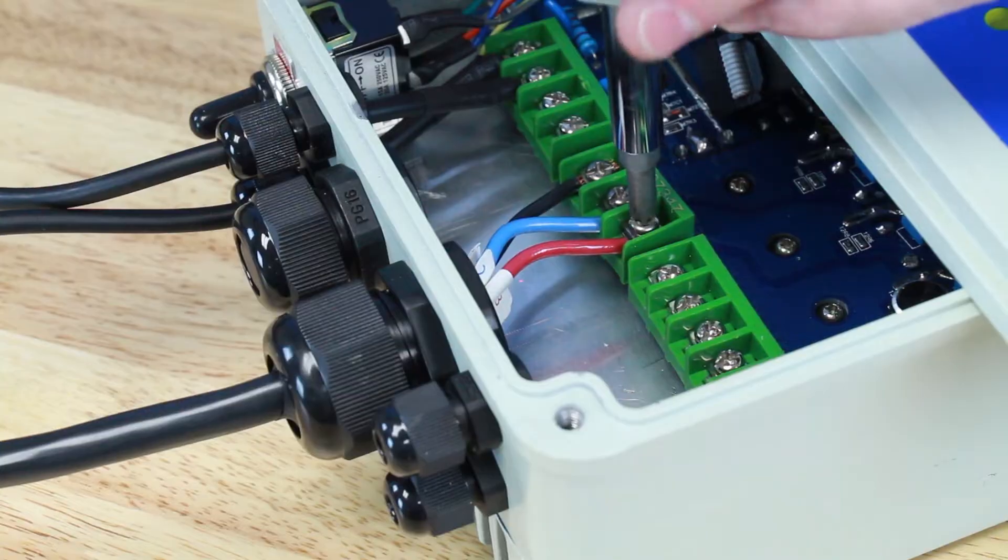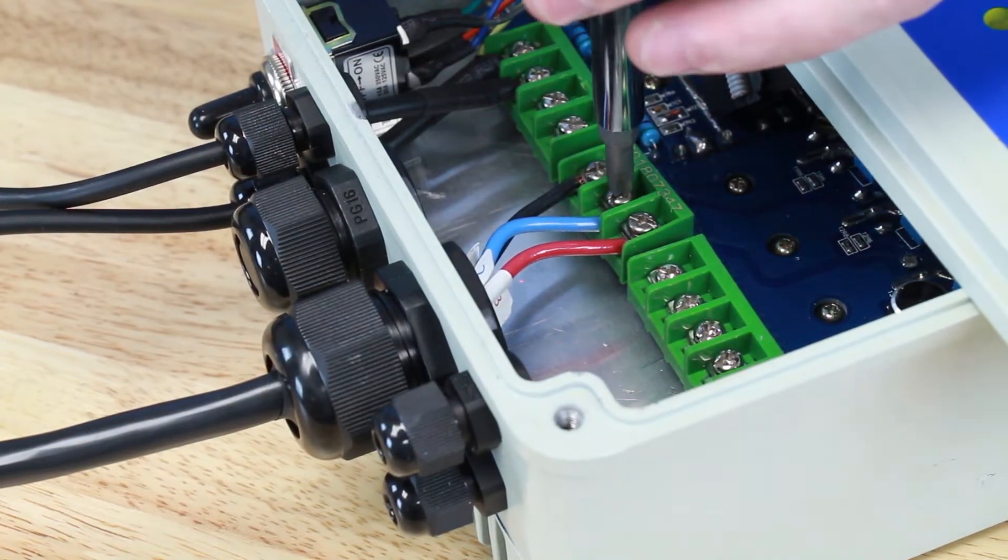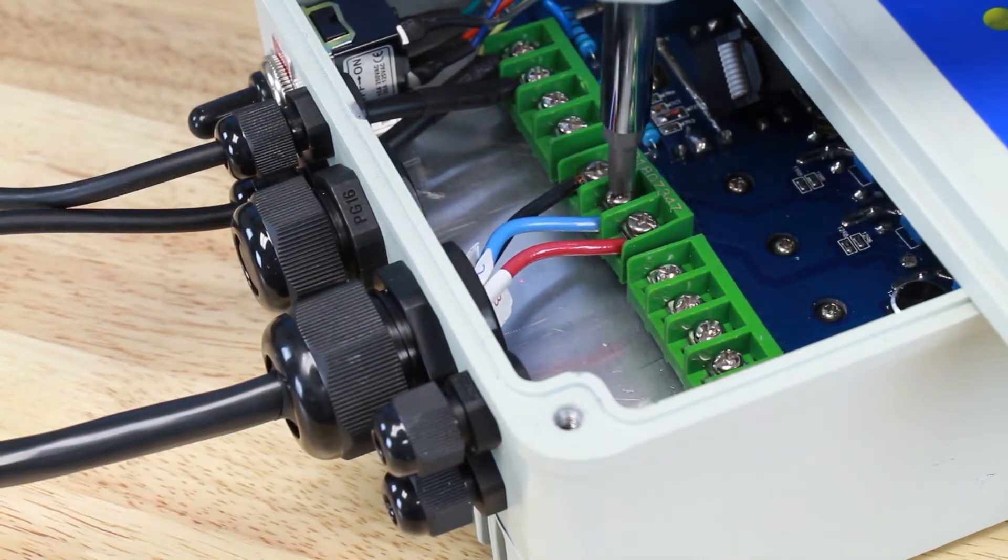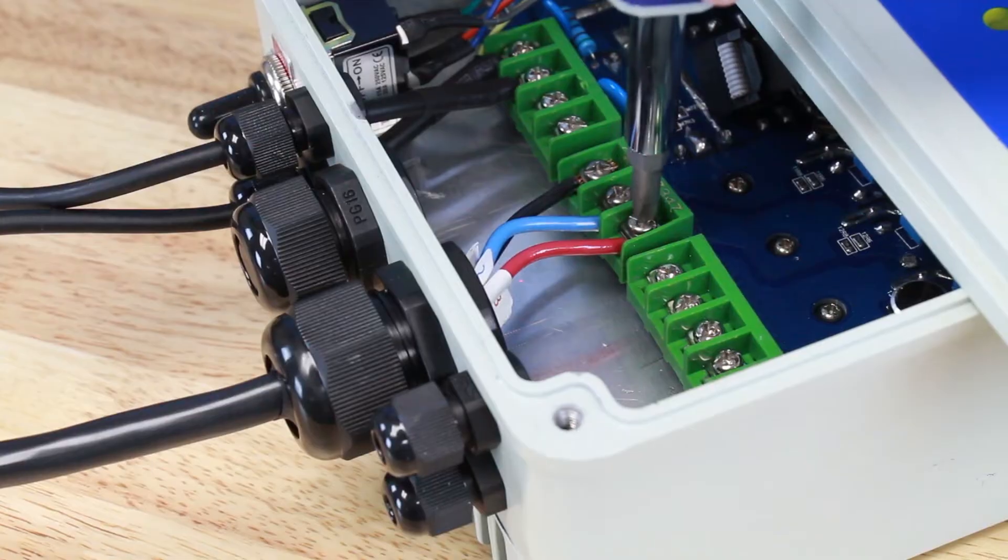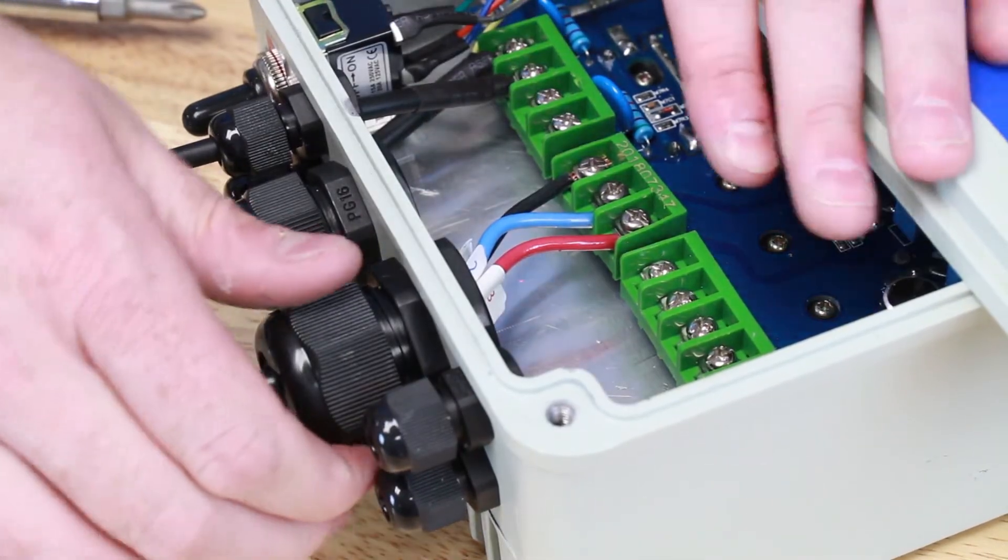And the third wire, the red wire, hooked up to our number three slot. Tie these down pretty snug. Don't want to overtighten and break them off of the circuit board, but we also want to make sure they're not coming loose.